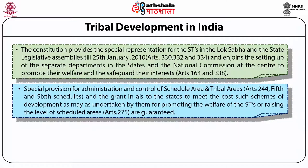The special provision for administration — that means tribal administration — and to take control of the scheduled areas and tribal areas, which are spelled out in Article 244 in both the 5th and 6th Schedules, also grants a special grant to support individual states to meet the cost of various developmental schemes taken by both the central government and state governments, thus promoting the welfare of scheduled tribes so that they can raise themselves on par with other social groups. This granting of financial aid is specifically spelled out in Article 275, which guarantees that the government will take care of their welfare.